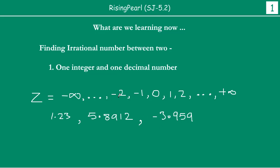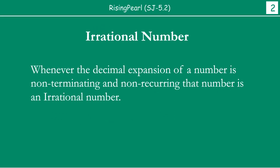So today we are going to take an integer and a decimal number and we will try and find some irrational numbers in between them. Now before we go any further, let us take a quick look at the definition of an irrational number. Whenever the decimal expansion of a number is non-terminating and non-repeating, that number is called an irrational number.